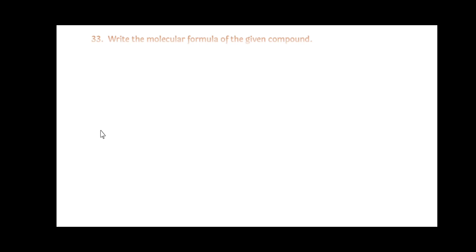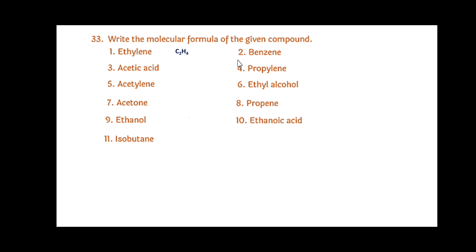Write the molecular formula of the given compounds. Here some organic compounds are given and we have to write their molecular formulas. Ethylene C2H4, benzene C6H6, acetic acid CH3COOH or C2H4O2, propylene C3H6, acetylene C2H2, ethyl alcohol C2H5OH or C2H6O, acetone C3H6O, isobutane C4H10.